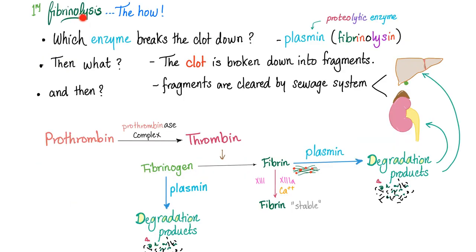Let's talk about fibrinolysis. The enzyme is called plasmin. Plasmin comes from plasminogen. What does plasmin do? It degrades fibrinogen into fibrinogen degradation products, degrades fibrin into fibrin degradation products, and degrades stabilized fibrin into D-dimer.